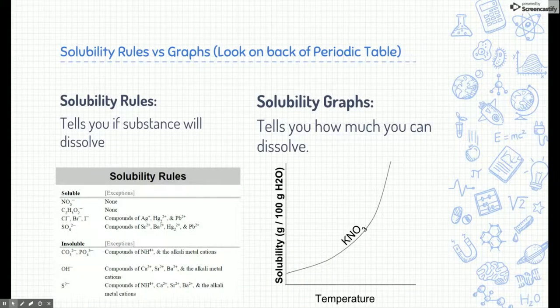The last time we talked about notes, it was solubility rules, and these were found on the back of your periodic table. But we can also find another thing on the back of your periodic table called solubility graphs. Solubility rules tells you if a substance will dissolve or not, and so we would look at the solubility rules. We would look at the products of our reaction, and we would say, is it soluble or insoluble based on these rules?